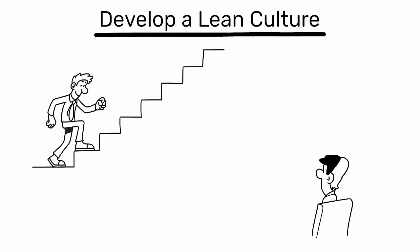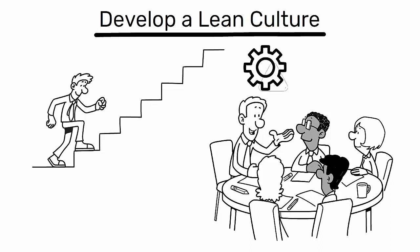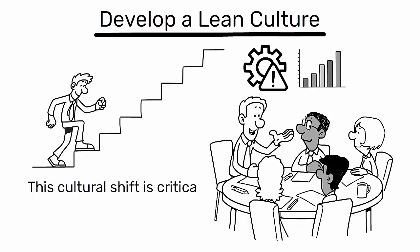Third, develop a lean culture. Foster a culture of continuous improvement where all team members are encouraged to identify inefficiencies and suggest improvements. This cultural shift is critical for lean to be successful and sustainable.